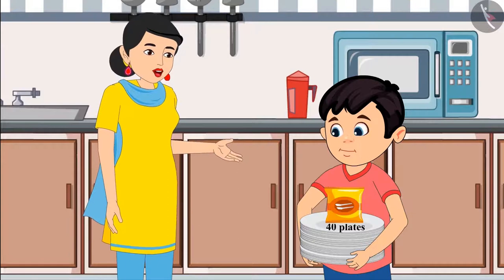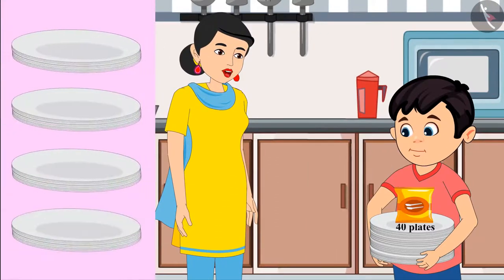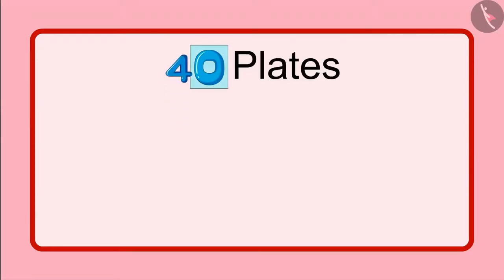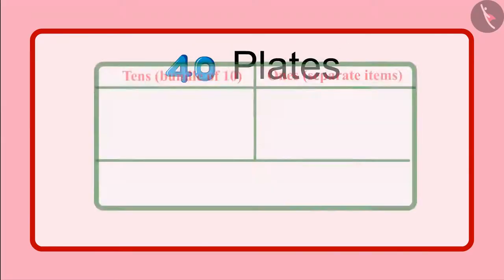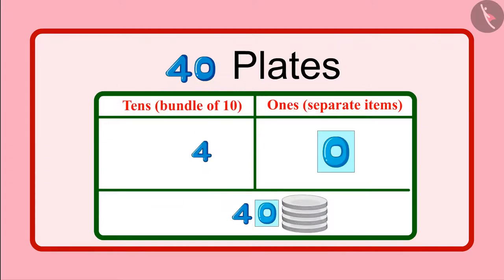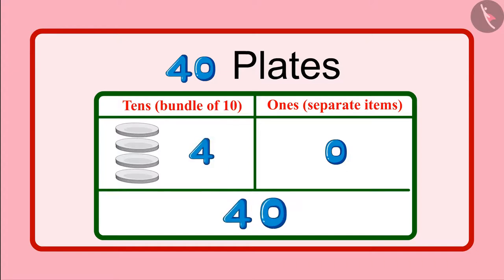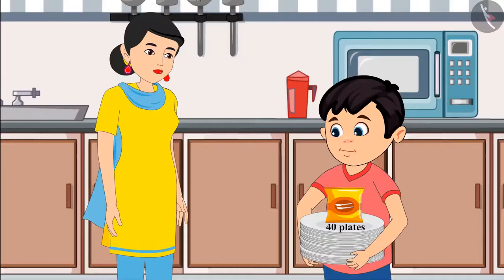It's written here 40 plates, which is 4 groups of 10 plates. But Mommy, even 0 is written here. What about it? Chotu, here 0 is written in place of unit, which means not a single open plate. And instead of 10, it is written 4, which means 4 groups of 10 plates, meaning 40 plates. So a total of 40 plates are there in this packet. Okay, now I have understood, Mommy.